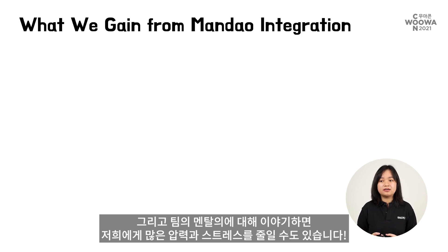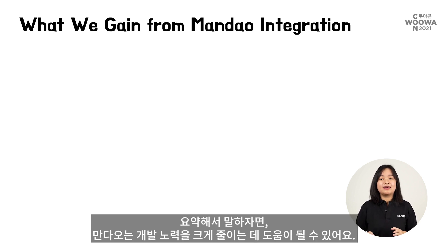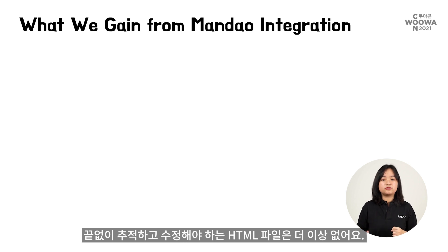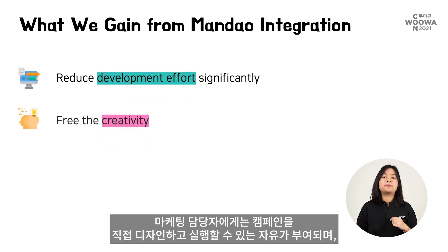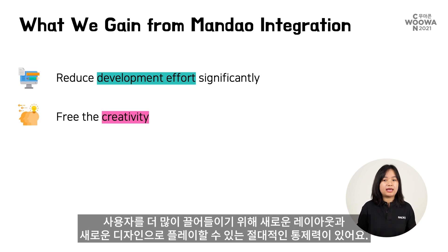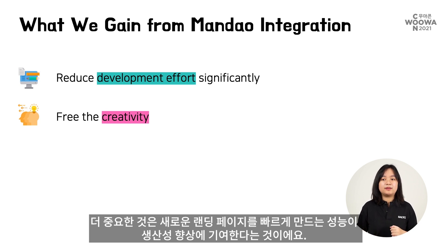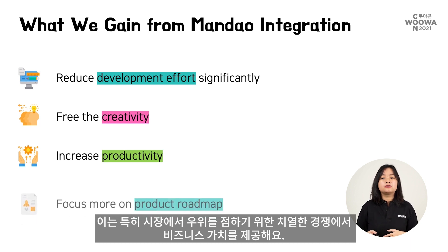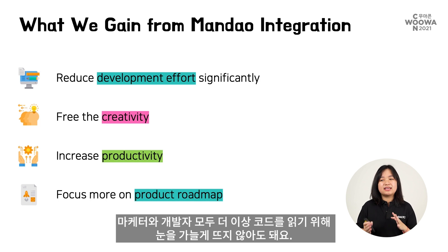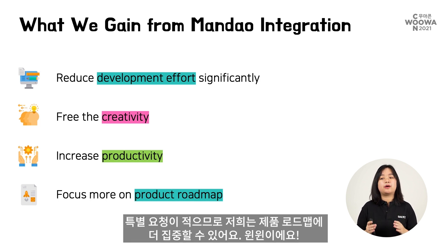Speaking about team spirit, it could have saved us a lot of pressure and stress as well. In summary, Mandau can help significantly reduce development effort. There are no more HTML files to keep track of or modify endlessly. Marketing people are granted the freedom to design and run campaigns by themselves, with full control to play with new layouts and designs to attract more users. More importantly, the ability to quickly turn out new landing pages contributes to increased productivity — which has direct business value, especially during intense competition to gain the upper hand in the market.